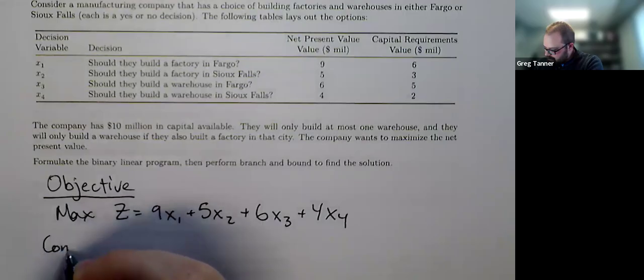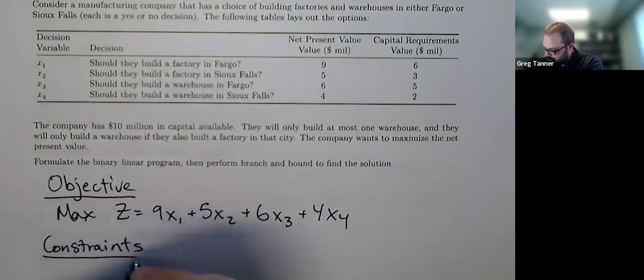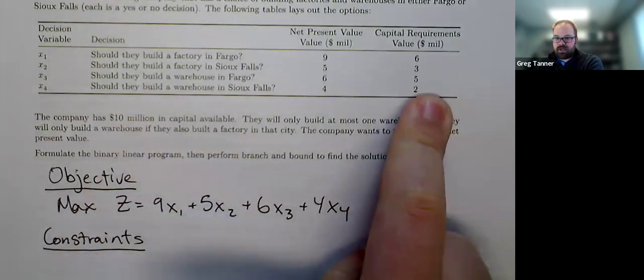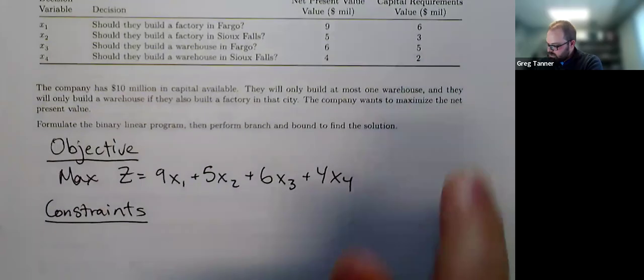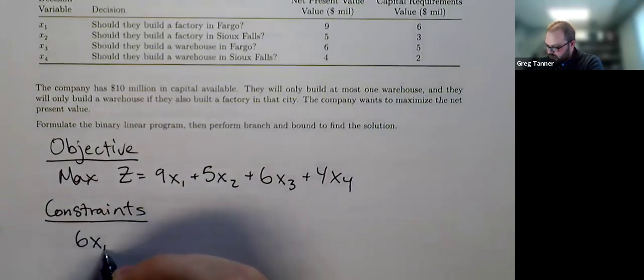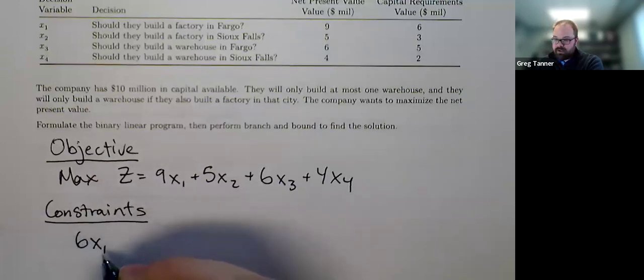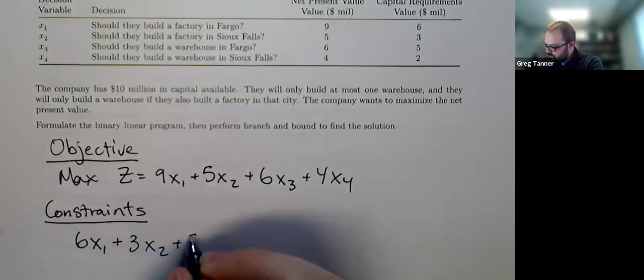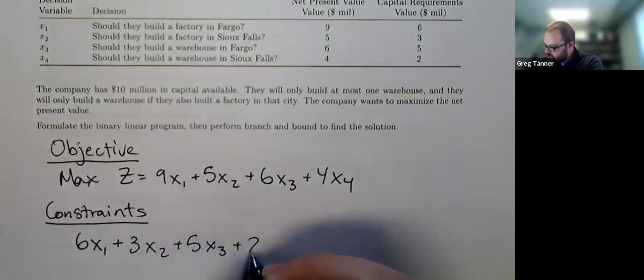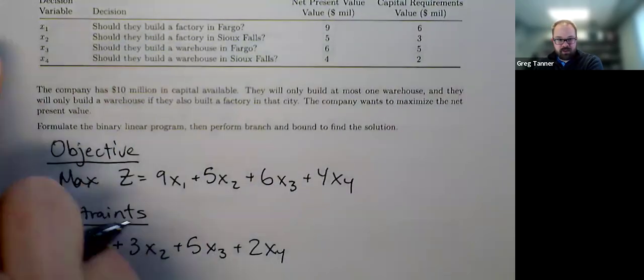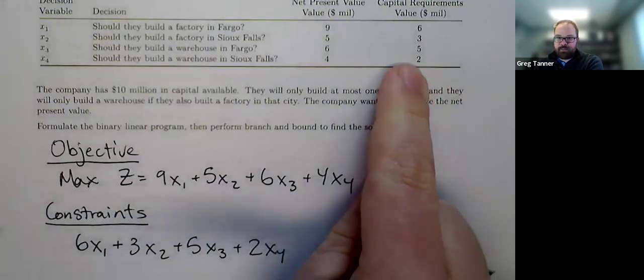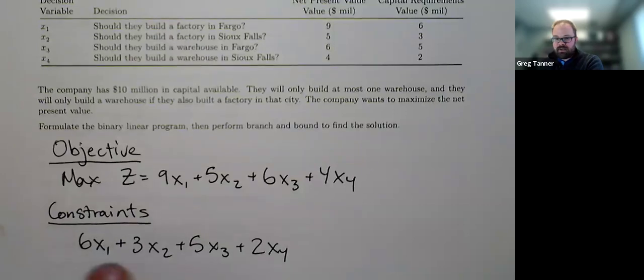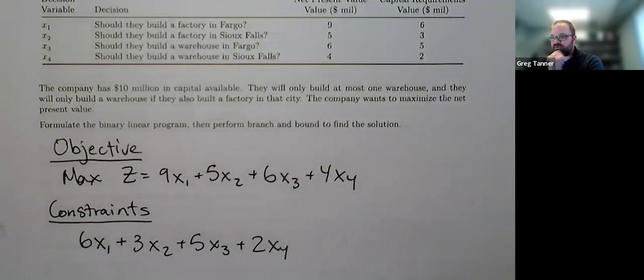And then we've got our constraints. First constraint is we've got 10 million of capital available. And here's the capital used up by each of those decisions. And so capital for the x1 investment, it's going to be zero if x1 is zero, but it's going to be 6 million if x1 is one, plus 3x2 plus 5x3 plus 2x4. Essentially reading off these values and multiplying them by the decision variables. So we're incurring that capital cost if we decide to build it. We're not incurring that capital cost if we don't decide to build it. And so these binary variables essentially turn on or turn off that cost.